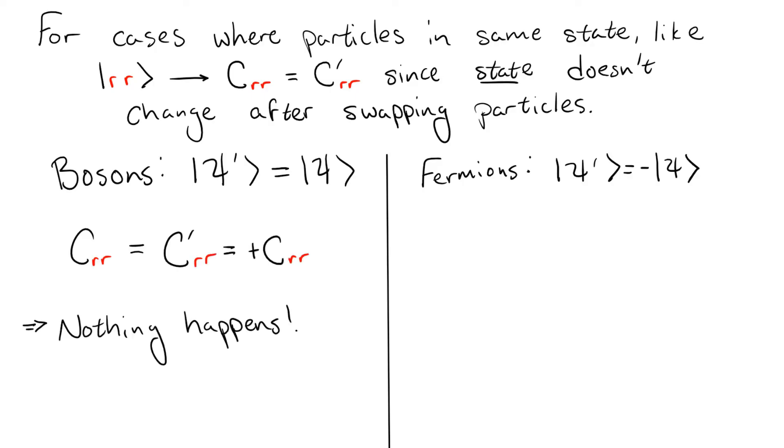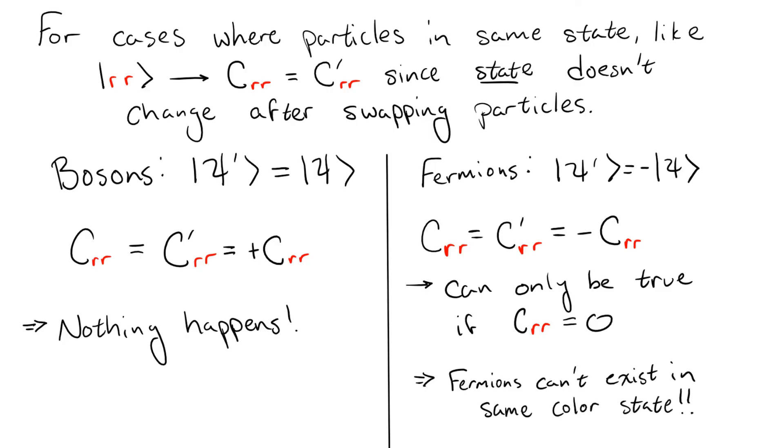However, when we switch to fermions, we must get a minus sign, which tells us that crr is equal to minus crr. Well, the only way that this can happen is if crr is equal to zero. Now, remember that these coefficients correspond to probabilities when we square their magnitude. So this tells us that it is impossible to ever measure two fermions which are both in the red state.